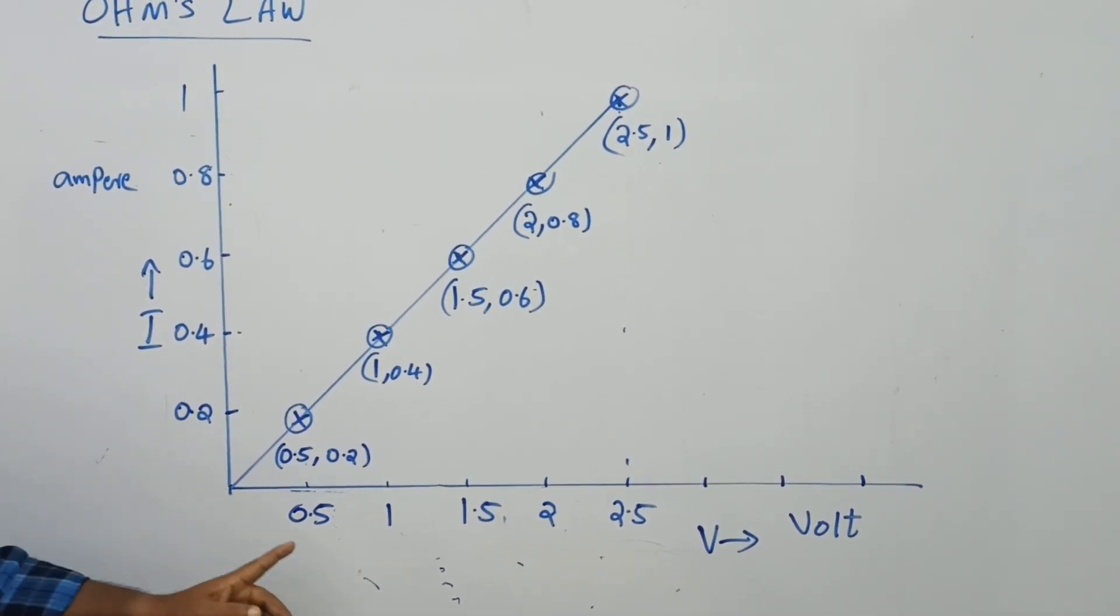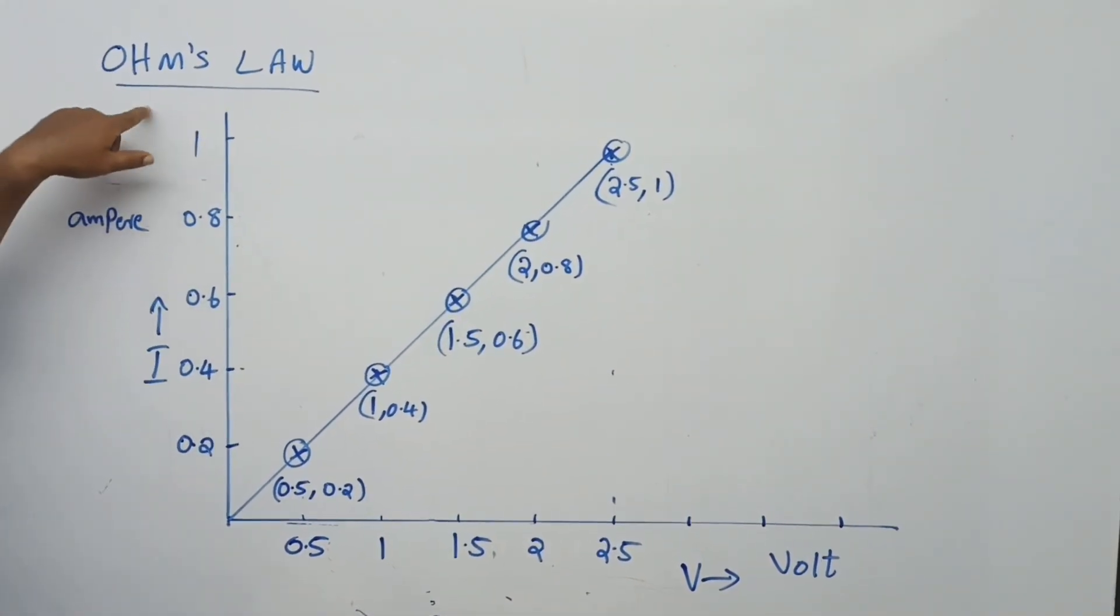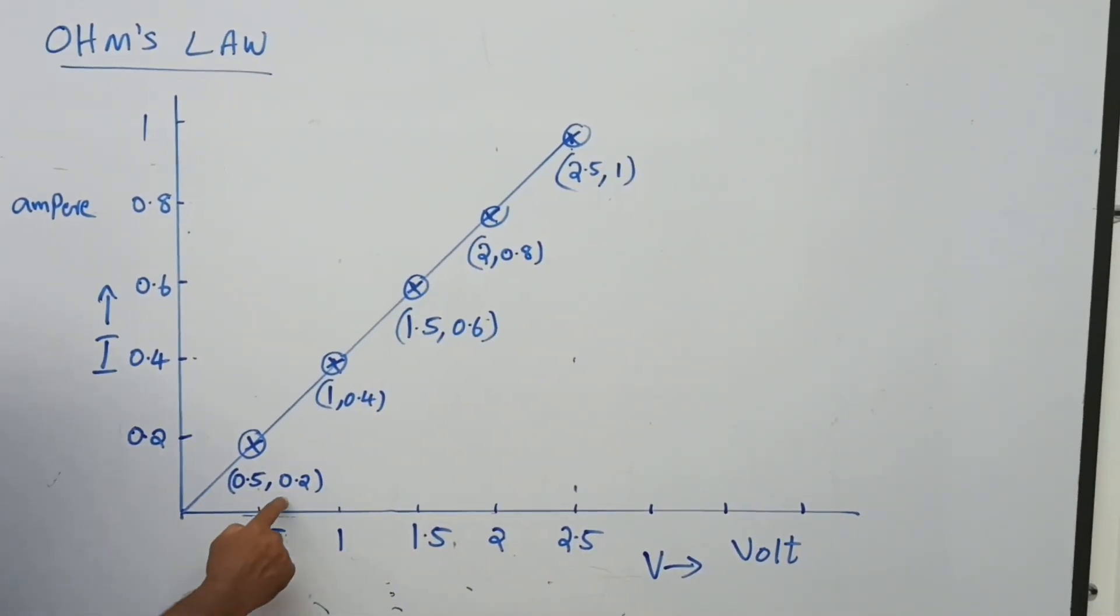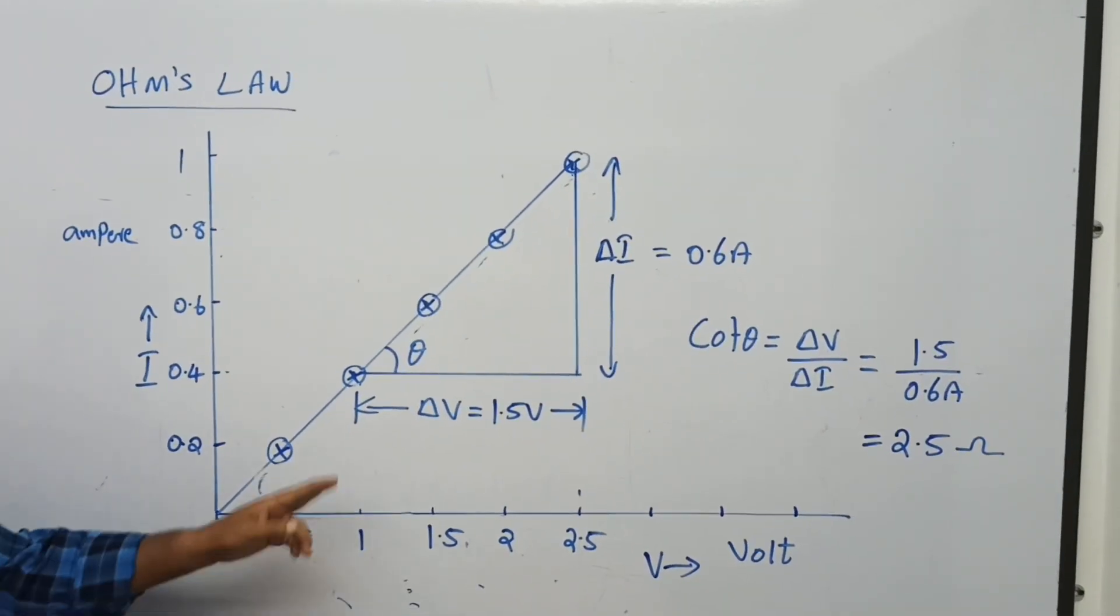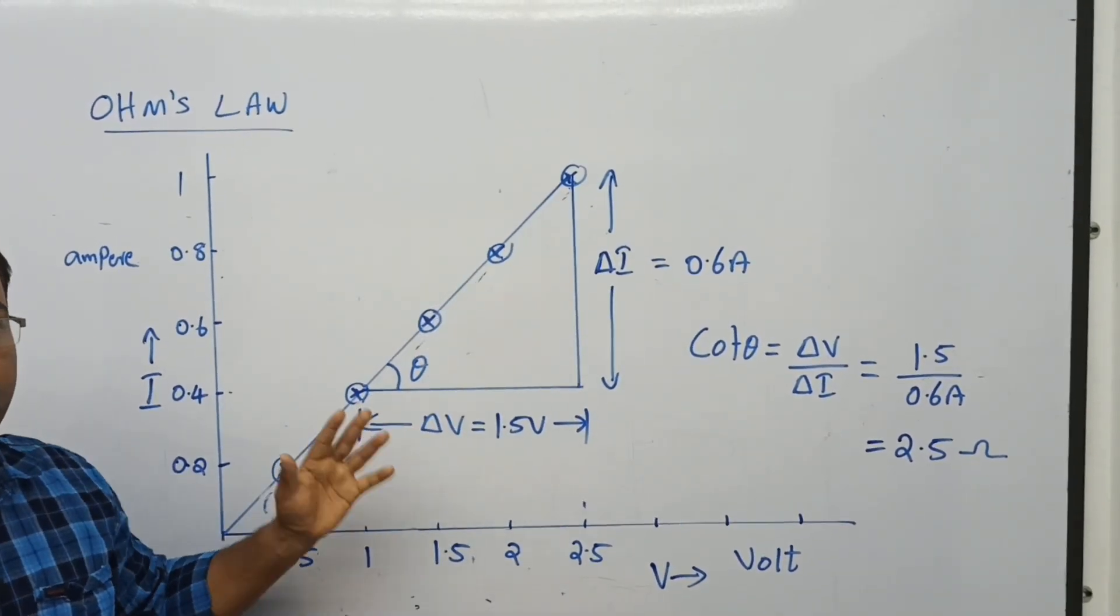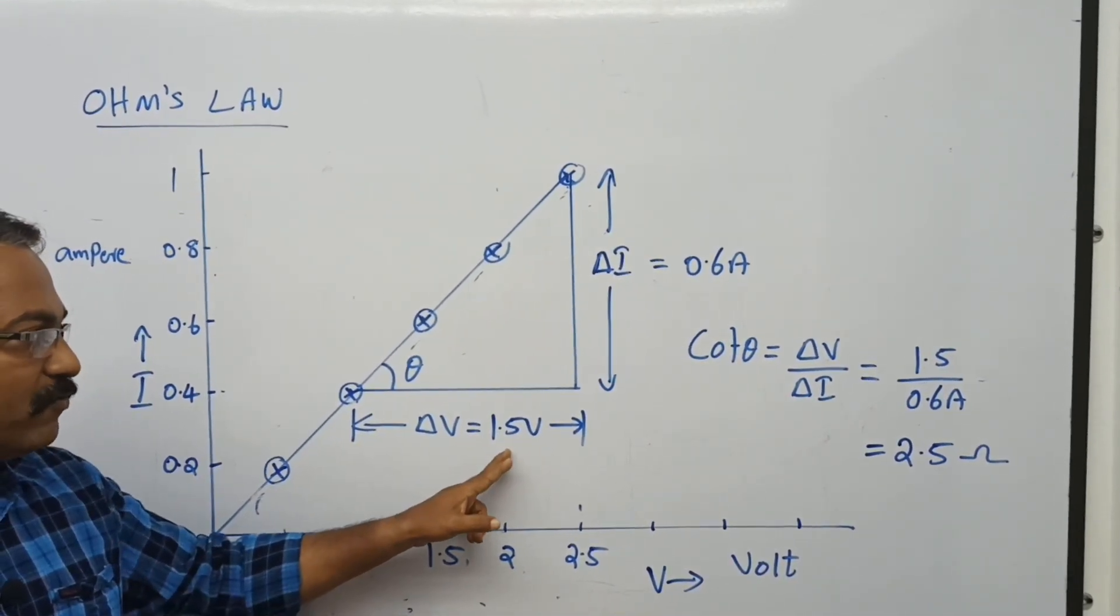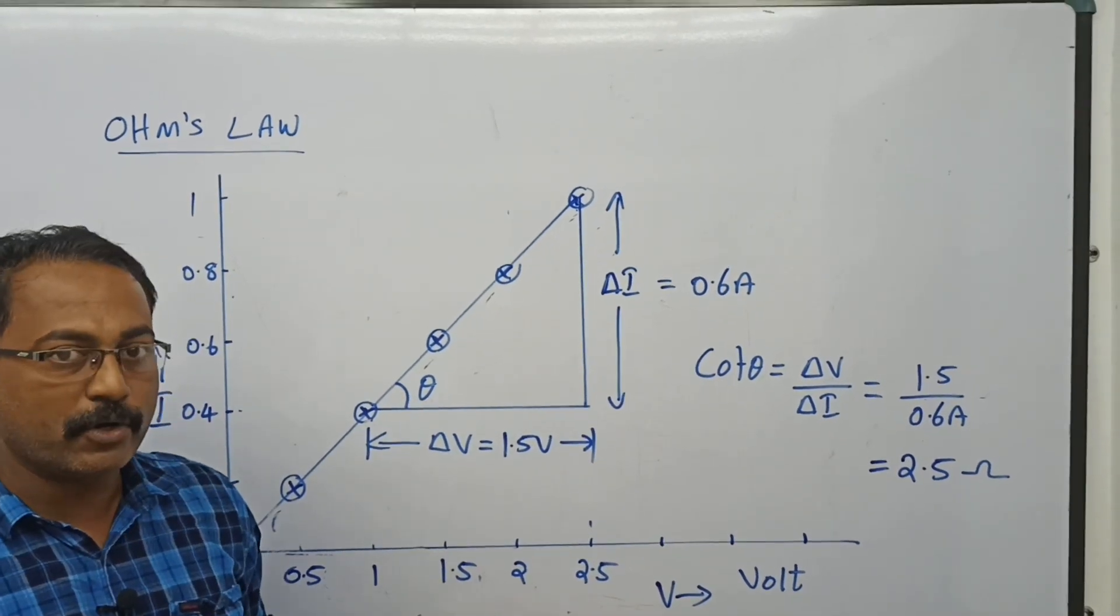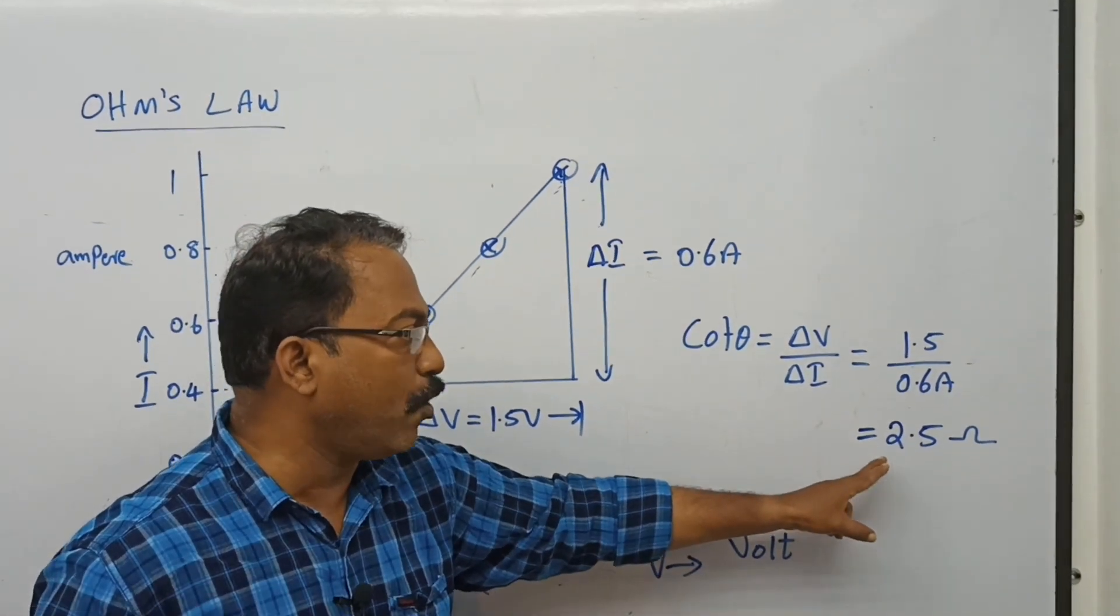Using the obtained values, I plotted a graph by plotting voltage along x-axis and current along y-axis. I got a graph which is passing through the origin and which is a straight line. All points are marked here. I have plotted a triangle to obtain the reciprocal of its slope. This region is ΔV = 1.5 volt and ΔI from this point to this point is 0.6 amperes. The reciprocal of slope, cot θ = ΔV/ΔI, I got as 2.5 ohm.